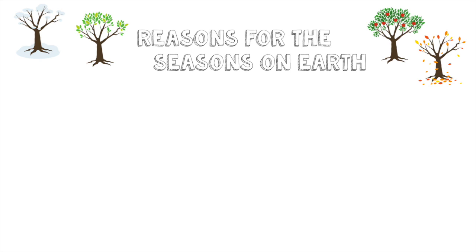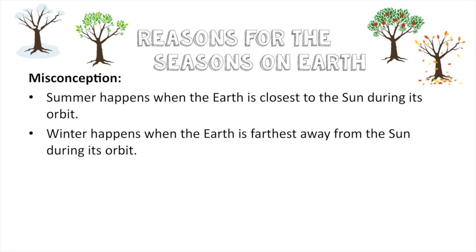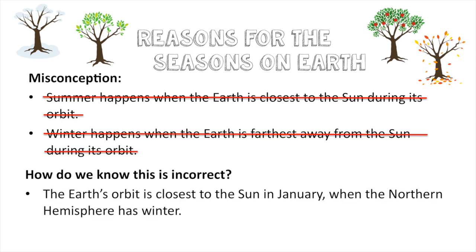Let's start with what causes the seasons on Earth. A lot of my students come into fifth grade with the misconception that summer happens when the Earth is closest to the Sun during its orbit, and winter happens when the Earth is farthest away. One of the first pieces of evidence against this is that the Earth's orbit is actually closest to the Sun in January, and if that were true it should be summertime, but the northern hemisphere actually has winter during that time.